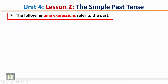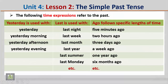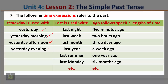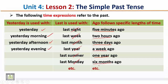The following time expressions refer to the past. 'Yesterday' is used with morning, afternoon, or evening. 'Last' is used with night, week, month, year, summer, Monday, etc. 'Ago' follows specific lengths of time: five minutes ago, two hours ago, three days ago, a week ago, one year ago, six months ago, etc. Thank you for listening.